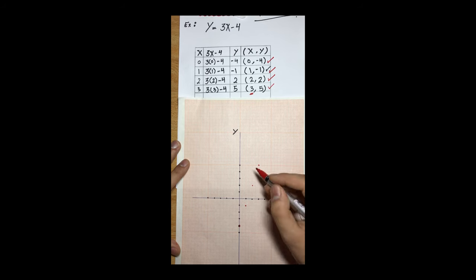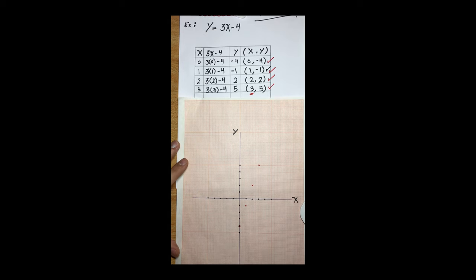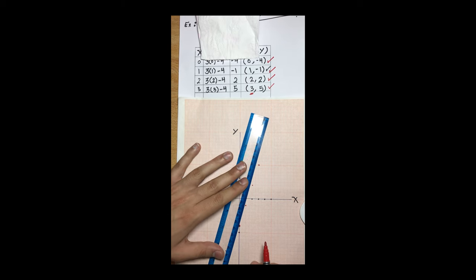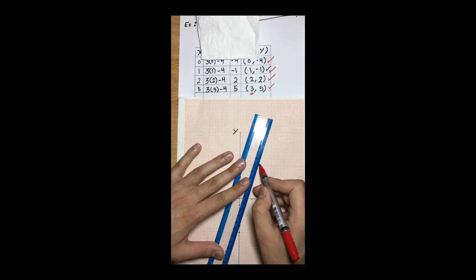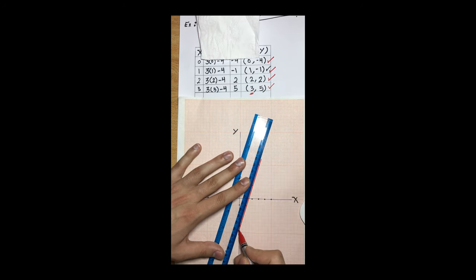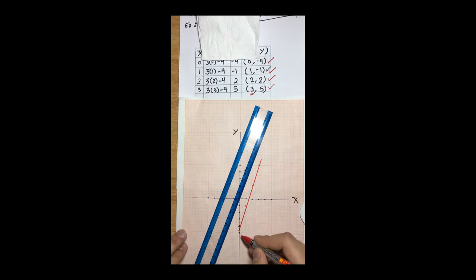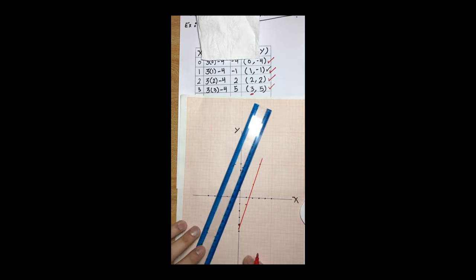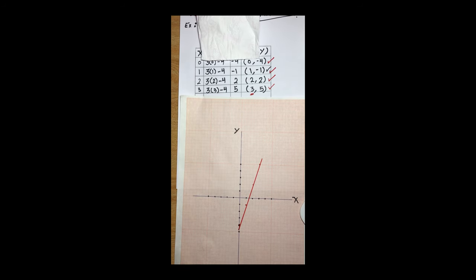The final step is to connect all these points to draw our line. We use a ruler and the line should pass through all the points. And that's all for this lesson — thank you for watching, I hope it was clear for you, and see you in the next video. Bye!